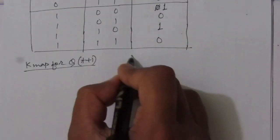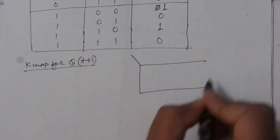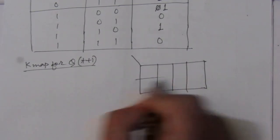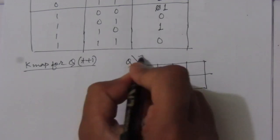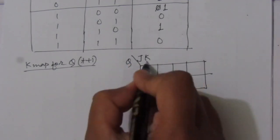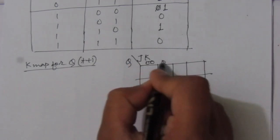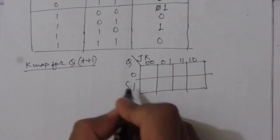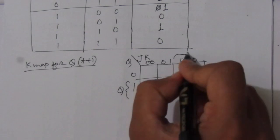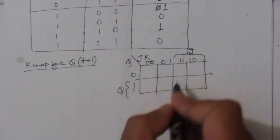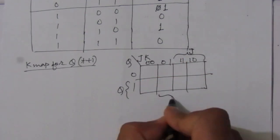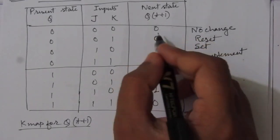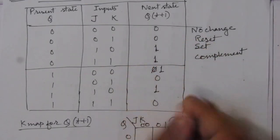Now let us find out the characteristic equation using a three-variable Karnaugh map with variables Q, J, and K. The column ordering is: 000, 001, 011, 010, 110, 111, 101, 100. The Q(t+1) values entered are: 0, 0, 1, 1, 1, 0, 1, 0.